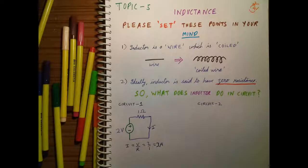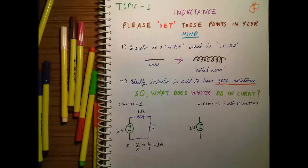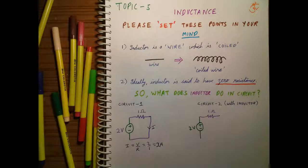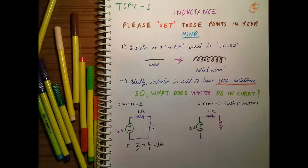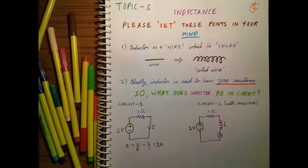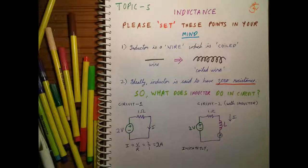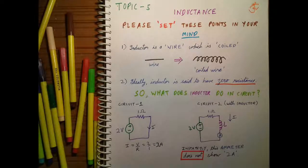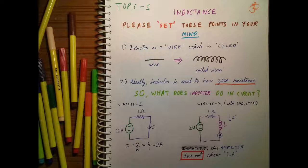Now let us take Circuit 2 with inductor. We take a 2 volt DC source, connect a 1 ohm resistor, then connect the inductance, and connect the ammeter to complete the circuit. What reading will we observe on the ammeter as soon as it is connected? Instantly this ammeter does not show 2 amperes. The inductor is not letting current flow instantly in the circuit.